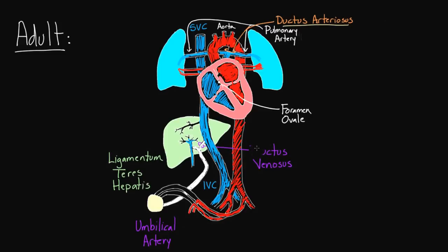And over on this side, this ductus venosus — well, it's no longer a duct, right? Duct implies that you can actually pass something through it, and as I've drawn it, it's a ligament. So we're going to name it something fancy as well — we'll call it ligamentum venosum. Remember, it used to be ductus venosus, so now we call this ligamentum venosum. That's fairly easy to remember.